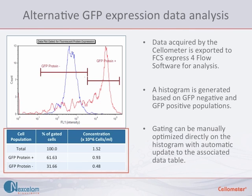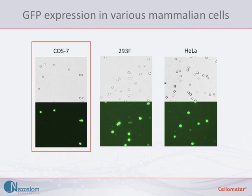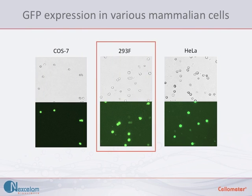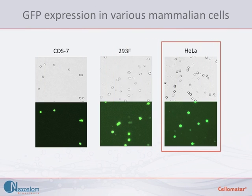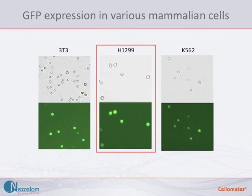The data table contains the percent of GFP positive and GFP negative cells as well as their corresponding concentrations. Our customers have successfully detected and quantified GFP expression in many different mammalian cell lines. Represented here are just some examples of those GFP expression experiments. A brightfield and a GFP micrograph is shown for each GFP expressing cell line, including COS7s, 293Fs, HeLa cells, 3T3 cells, H1299s, and K562 cells.